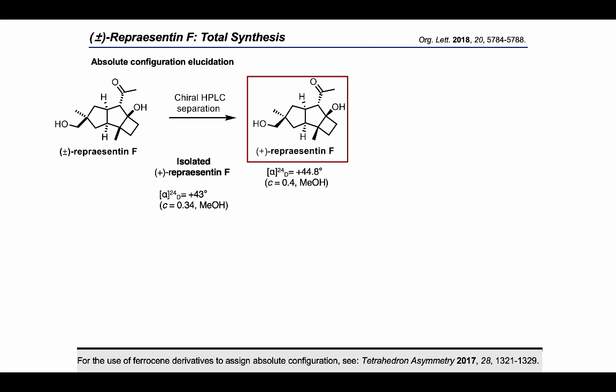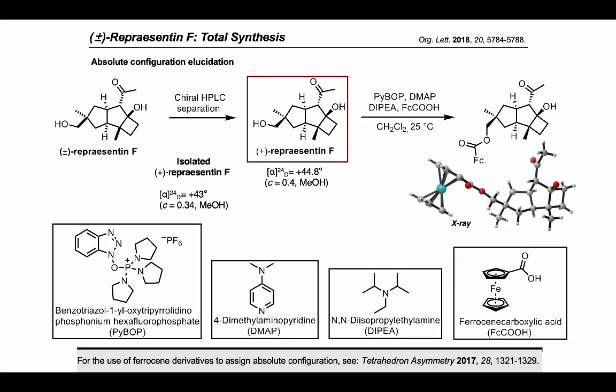In order to assign the absolute configuration of natural representin F by X-ray crystallography, the synthetic enantiopure sample was derivatized by esterification of the primary alcohol with ferrocenoyl carboxylic acid to give ferrocenoyl carboxylate. Single crystals of high quality were obtained which allowed the determination of the absolute configuration of representin F.